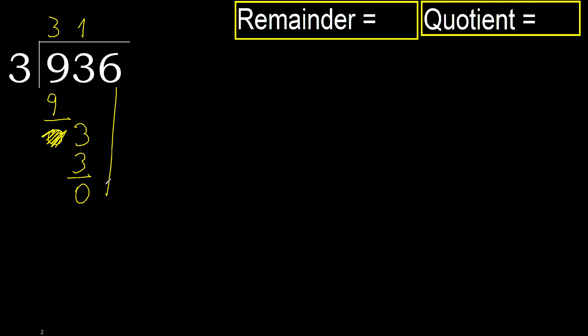Next, bring down. Eliminate 0. Bring down 6. 3 multiplied by 2 is 6 — it's not greater. Subtract.